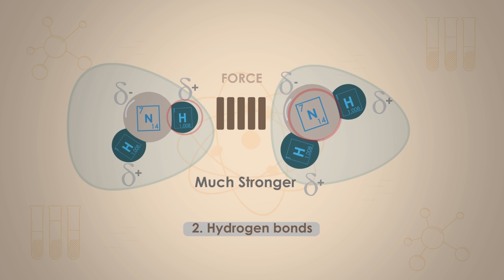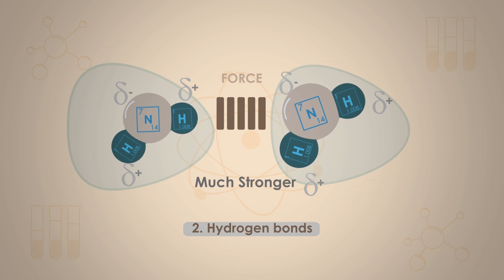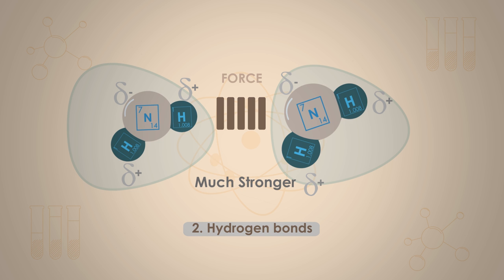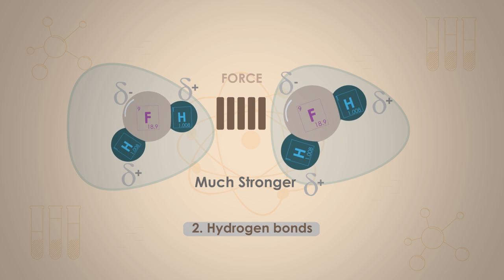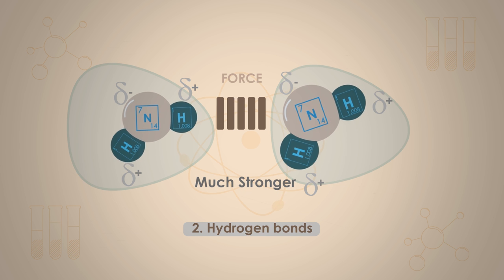This particular type of dipole-dipole attraction between the electron-deficient H, delta positive, of one molecule and the lone pair of electrons on a fluorine, oxygen or nitrogen atom of another molecule is given the special name of hydrogen bond. So, a hydrogen bond is the attraction between the H, delta positive, of one molecule and the delta negative on the lone pair of a fluorine, oxygen or nitrogen atom of a neighbouring molecule.